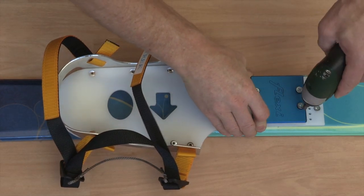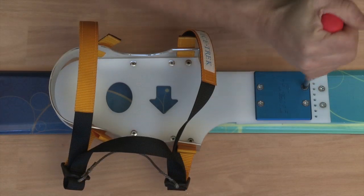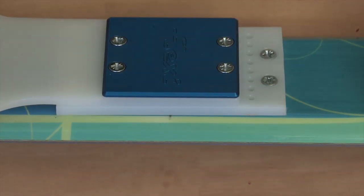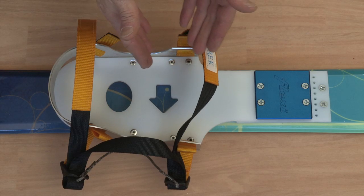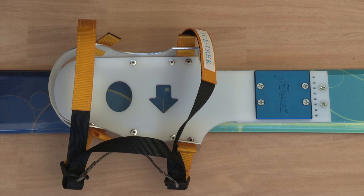Now screw your Flexi binding onto the multi-shim, bedding the screws firmly into the mounting plate. Your Flexi bindings are now mounted to your ski. But there are still a few things to know.